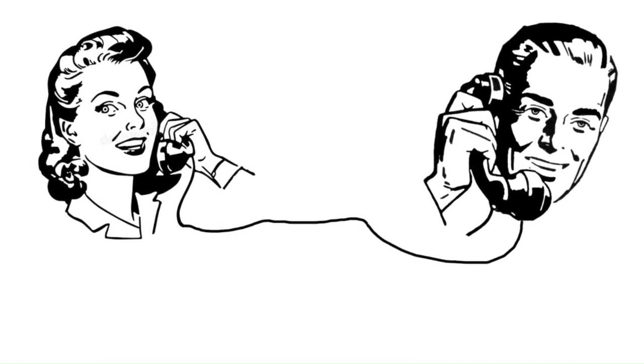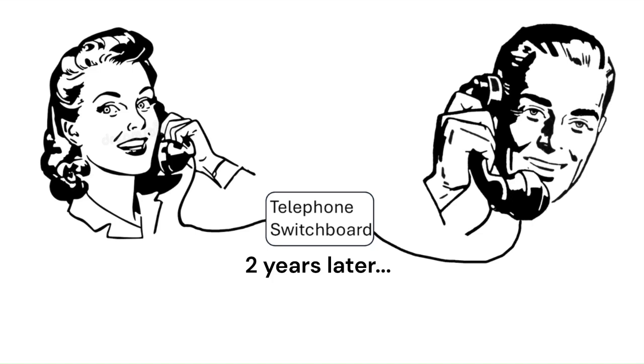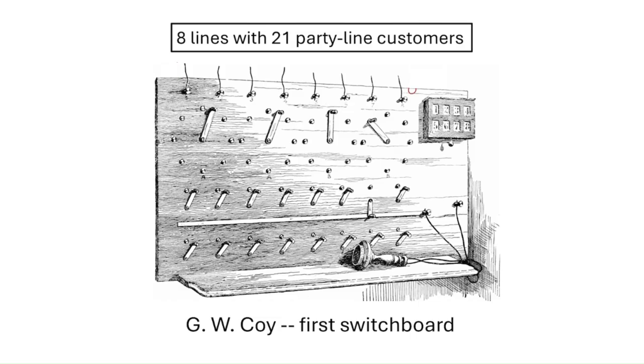In 1876, Alexander Graham Bell made his first telephone call to Thomas Watson. It was a direct connection — no exchange. Two years later, the switchboard was invented by George Coy. It supported only eight telephone lines, initially with 21 subscribers attached in a shared, party-line fashion.